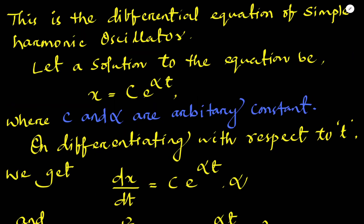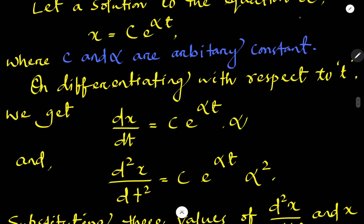Now, how do we solve this equation? For the solution of this second-order differential equation, we take x equal to c times e raised to alpha t, where c and alpha are arbitrary constants. Differentiating x equals c e to the power alpha t with respect to t: